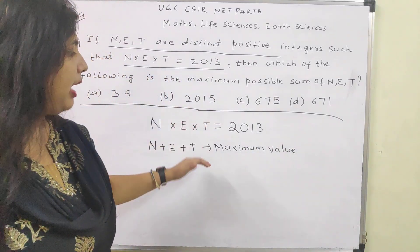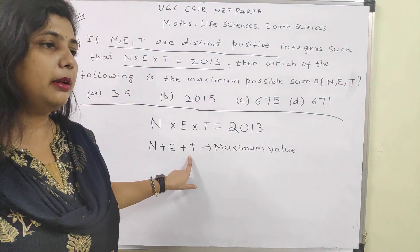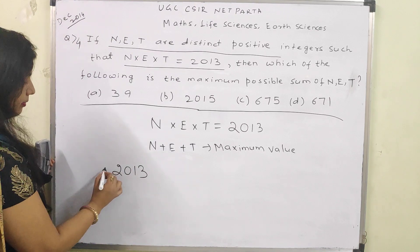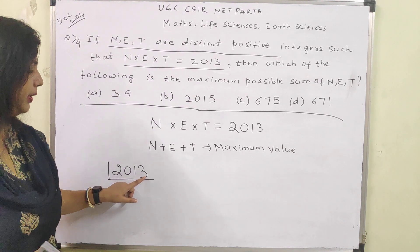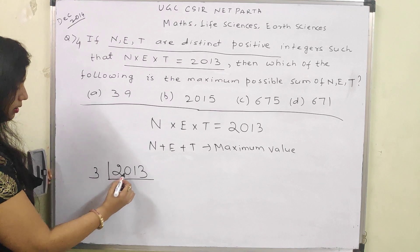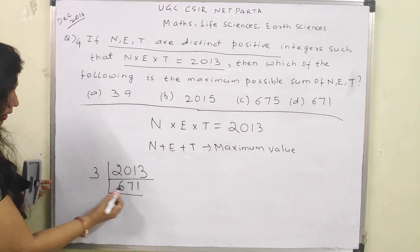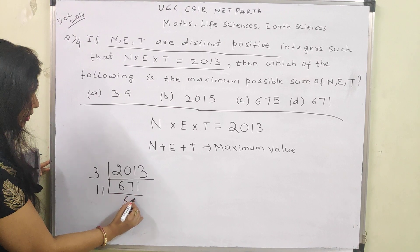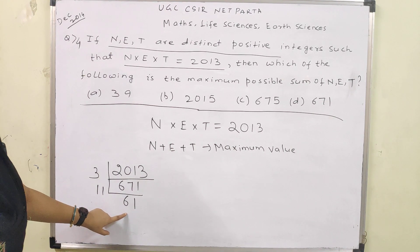When the question talks about maximum value, it means there must be more than one possible value of the sum N + E + T. We will move ahead for prime factorization of 2013. Clearly 2013 is not even, so not divisible by 2. Dividing by 3 gives 671. Looking carefully, 671 is divisible by 11, which is also a prime number. So 671 = 11 × 61. And 61 is also prime.